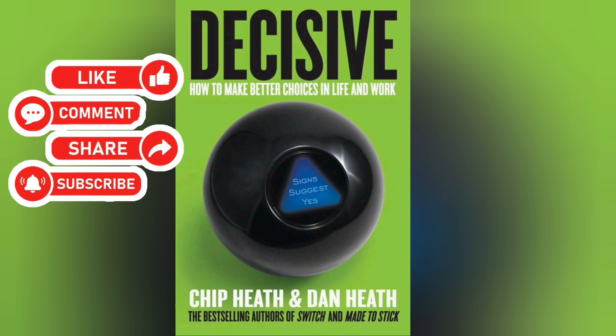Decisive gives you a scientific, four-step approach to making better decisions in your life and career, based on an extensive study of the available literature and research on the topic. The Heath brothers' books are well-researched, fun to read, and always come packed with a multitude of great insights. After Made to Stick in 2007 and Switch in 2010, Decisive, published in 2013, is their most recent book about making better decisions. They've created a four-step process called WRAP, which you can run through each time you have to make a big, important decision.